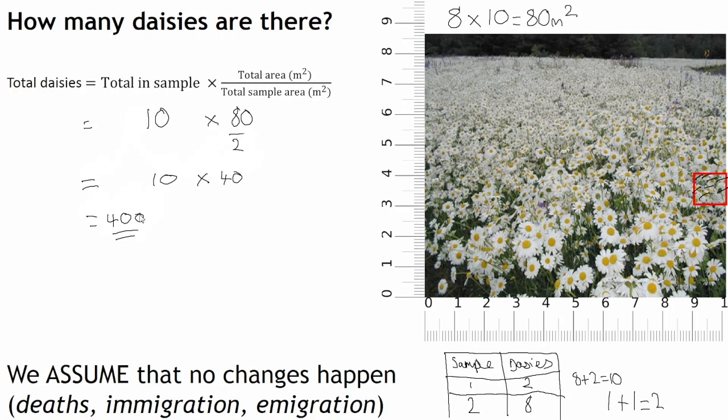Wow. That's more than double the original estimation for the total number of daisies in this field. You can see how much of a difference it makes taking a large sample size. That's why it's so important to take lots of different areas for the quadrat rather than just a couple. I'd argue that even just 2 is not enough. I'm going to use 2 for the sake of this video, otherwise I'd be here for half an hour. But in reality the more the better.